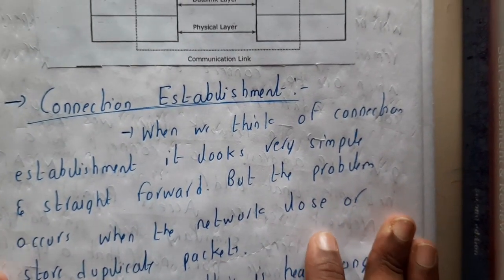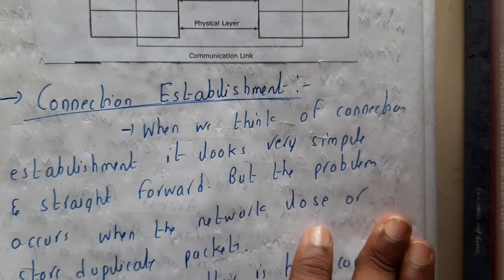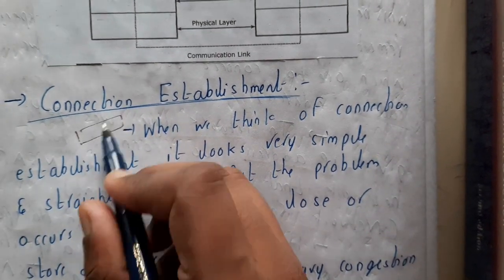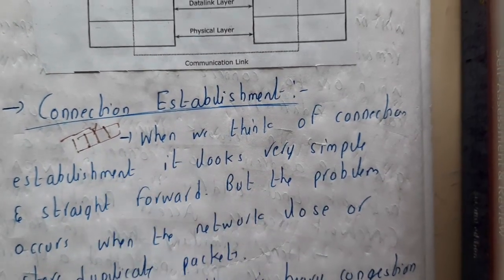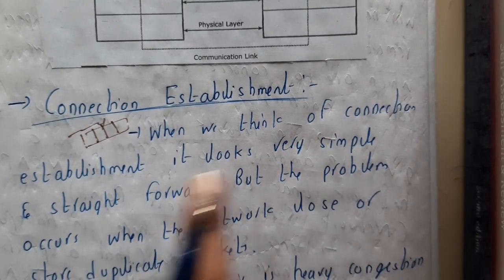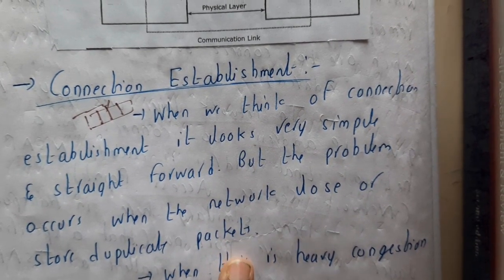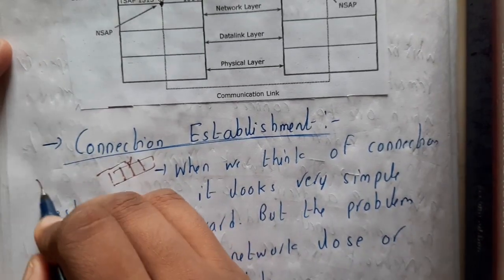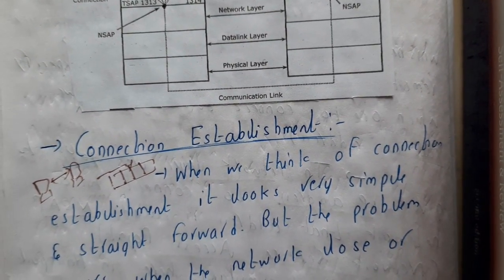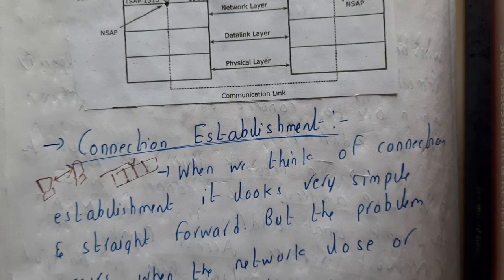Why do we need to establish a connection? Because we are using connection-oriented communication. First you need to identify the path, and then you send all your packets along that path. When we think of connection establishment it looks simple, but problems occur when the network causes loss or starts producing duplicate packets. You might think connecting two systems is really easy, but there are issues.